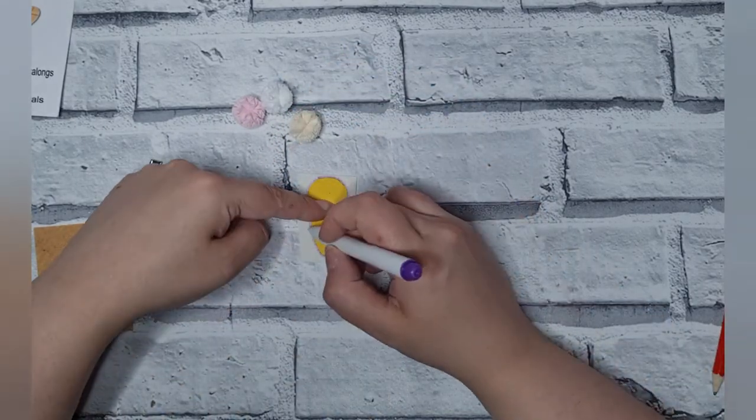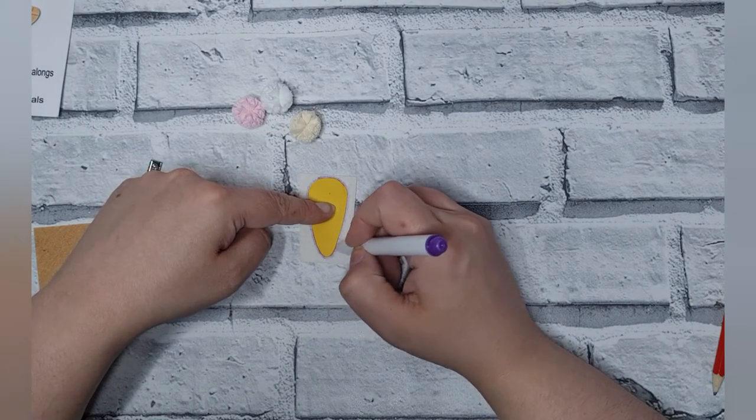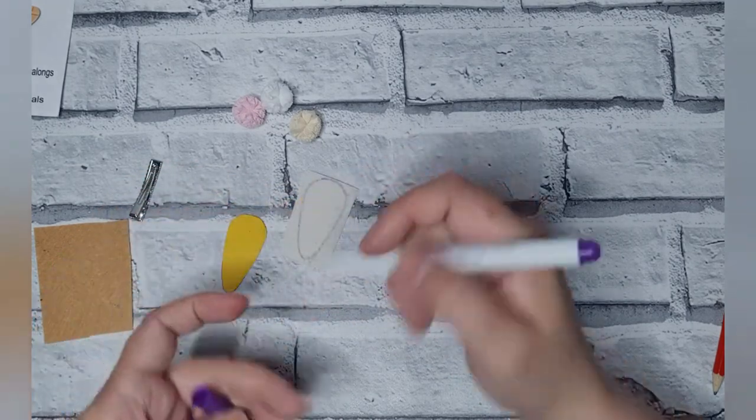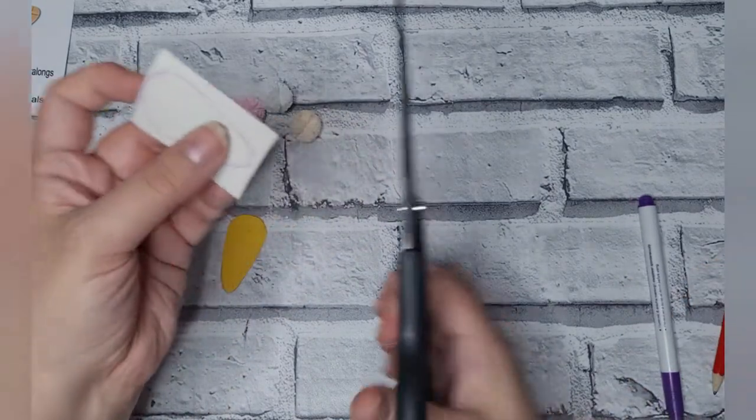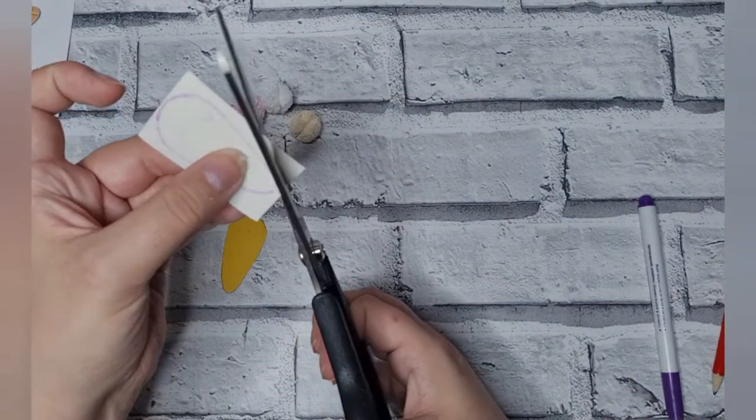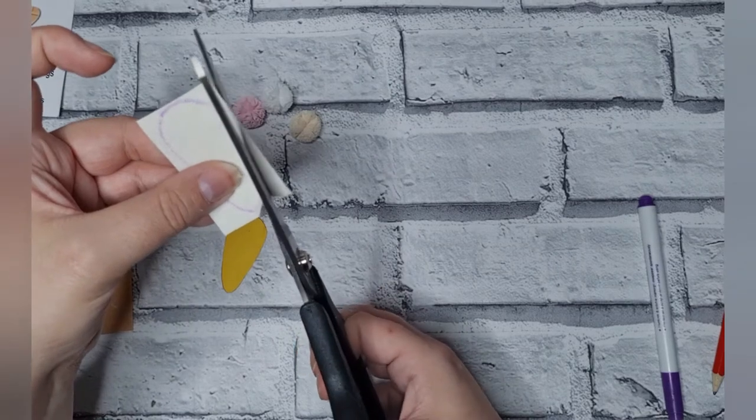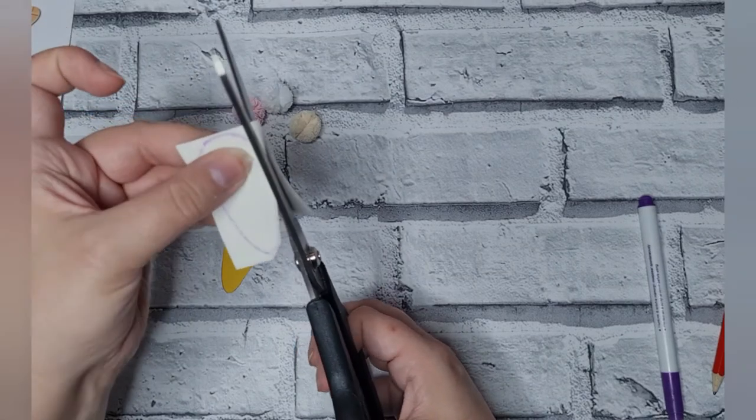As you can see, we've got a nice clear line for us to cut around. And just from the pen alone, you can already see it starting to fade before I've even started cutting it, so we know that it's definitely not going to mark the fabric or anything like that.